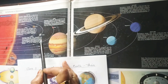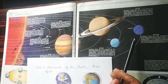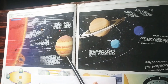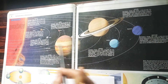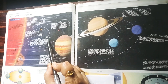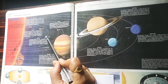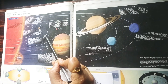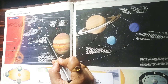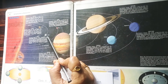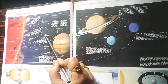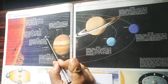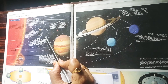These are the planets which revolve around the Sun: Mercury, Venus, Earth, Mars, Jupiter, Saturn, Uranus, Neptune. Among all these planets, Earth is the third planet which revolves around the Sun. Earth is a special planet because life is possible here. Life is possible because the layer of air called the atmosphere is found only on the Earth.